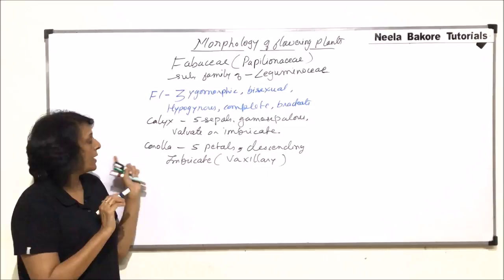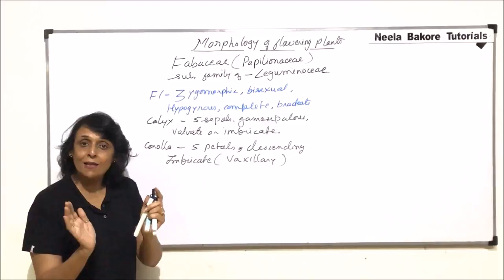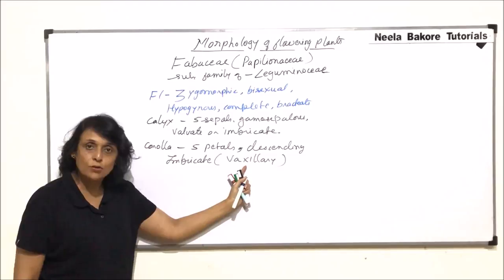The posterior petal is large and out. Then there are two petals on the side which have one margin in and one margin out. And there are two small boat-shaped petals because they are fused and they are the anterior ones. So as soon as we write vexillary or descending imbricate all this information automatically is understood.